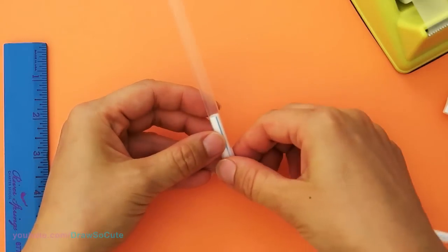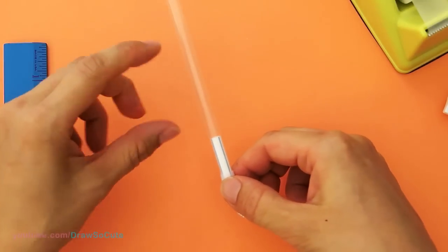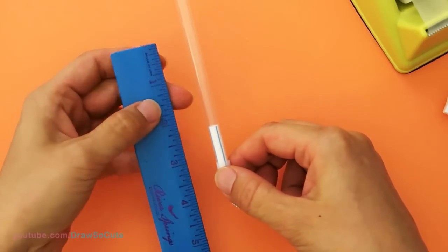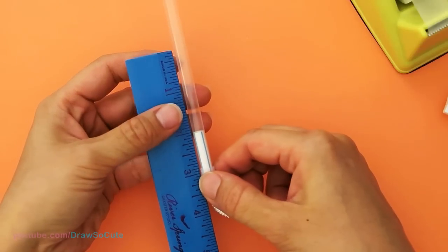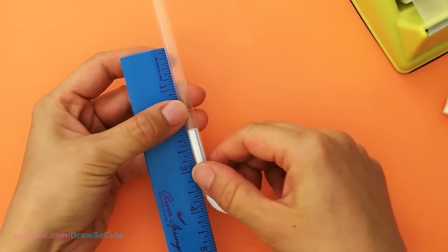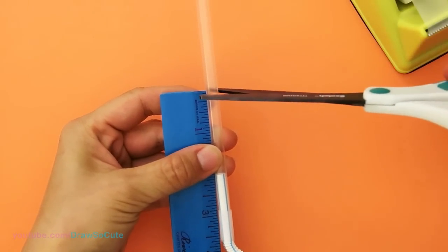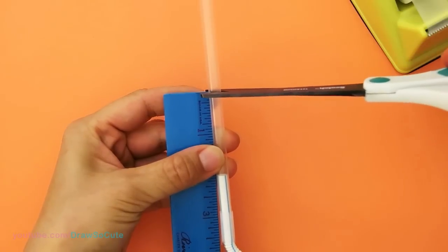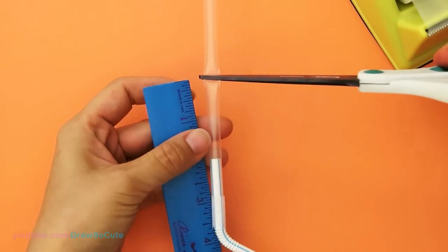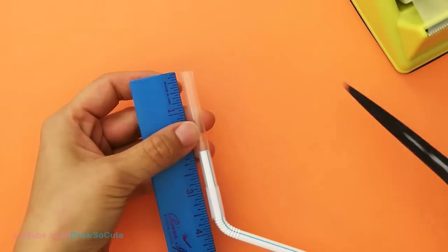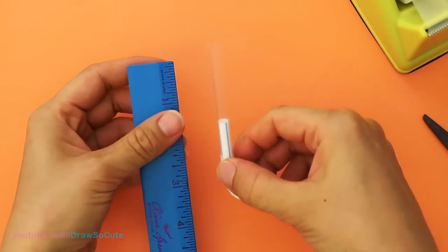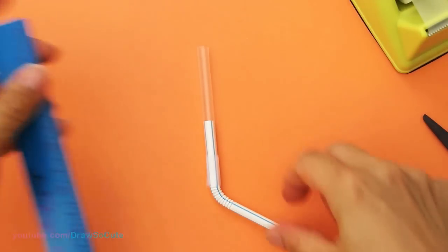So once it's taped together, I'm going to cut off this part right here. And there's no exact measurement, but I'm just going to say about two inches from where this straw starts right here. And I'm going to go ahead and just snip it off. So the bigger the ball that you use, the longer this piece is going to need to be so they can hold your ball when you blow it up.